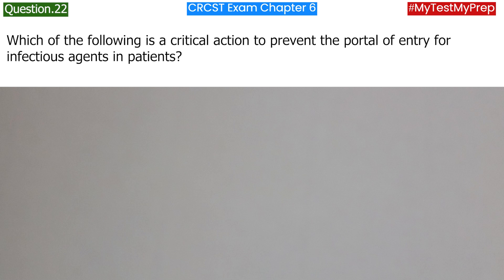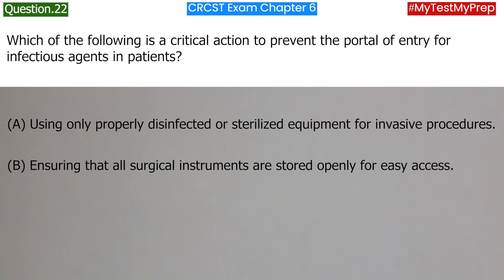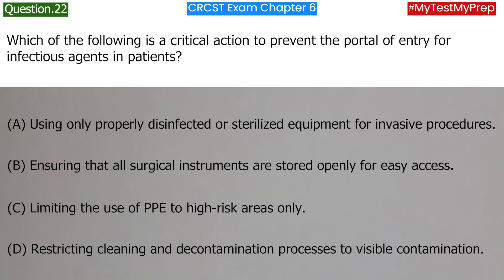Which of the following is a critical action to prevent the portal of entry for infectious agents in patients? A. Using only properly disinfected or sterilized equipment for invasive procedures. B. Ensuring that all surgical instruments are stored openly for easy access. C. Limiting the use of PPE to high-risk areas only. D. Restricting cleaning and decontamination processes to visible contamination. Answer: A. Using only properly disinfected or sterilized equipment for invasive procedures.